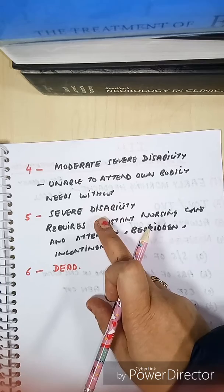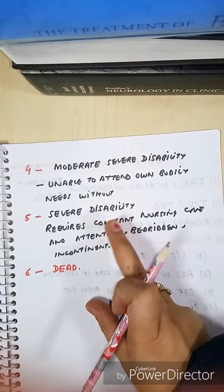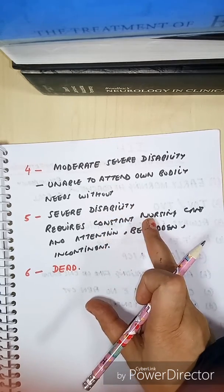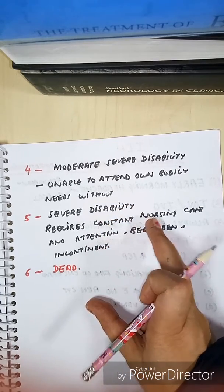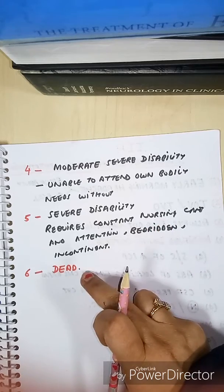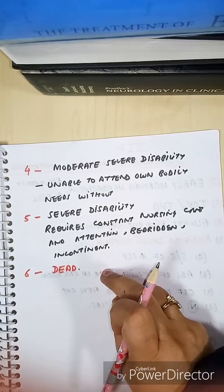In grade 5, the patient has severe disability — he is bed-ridden, incontinent, and needs continuous nursing care. Grade 6 means the patient is dead.